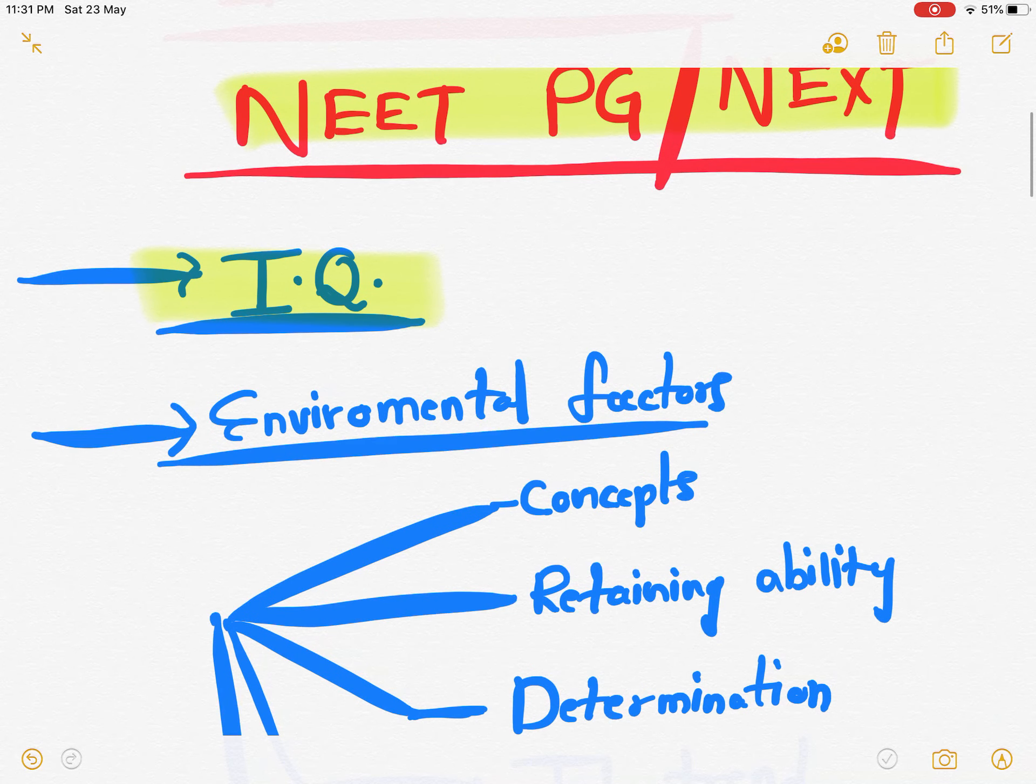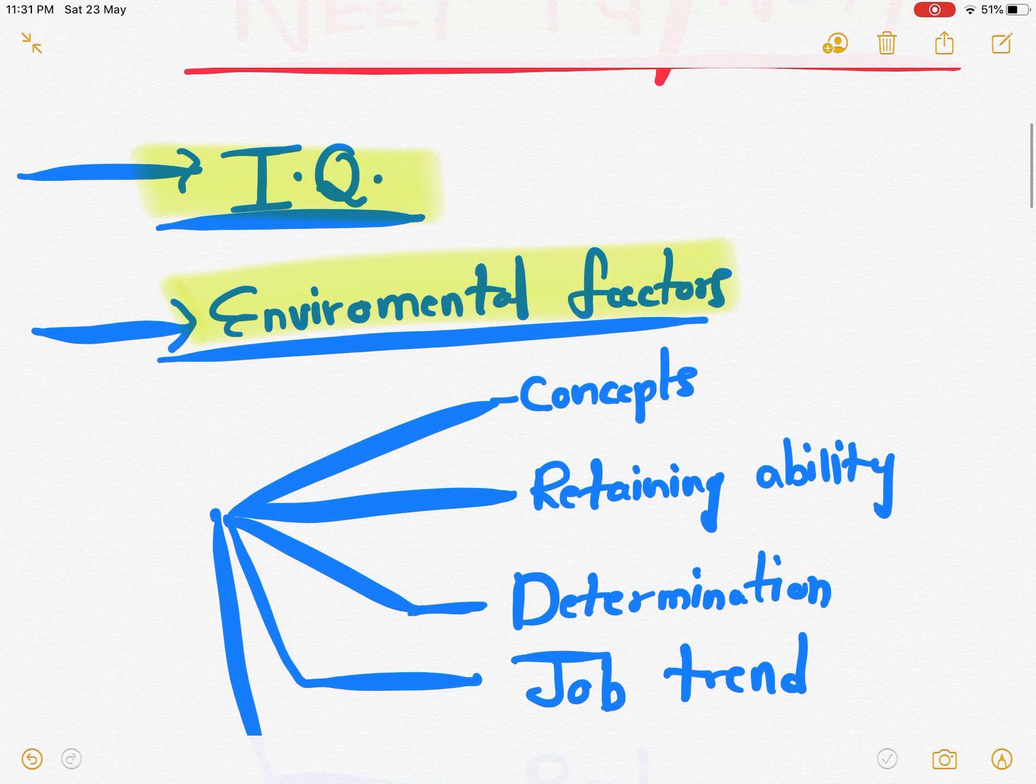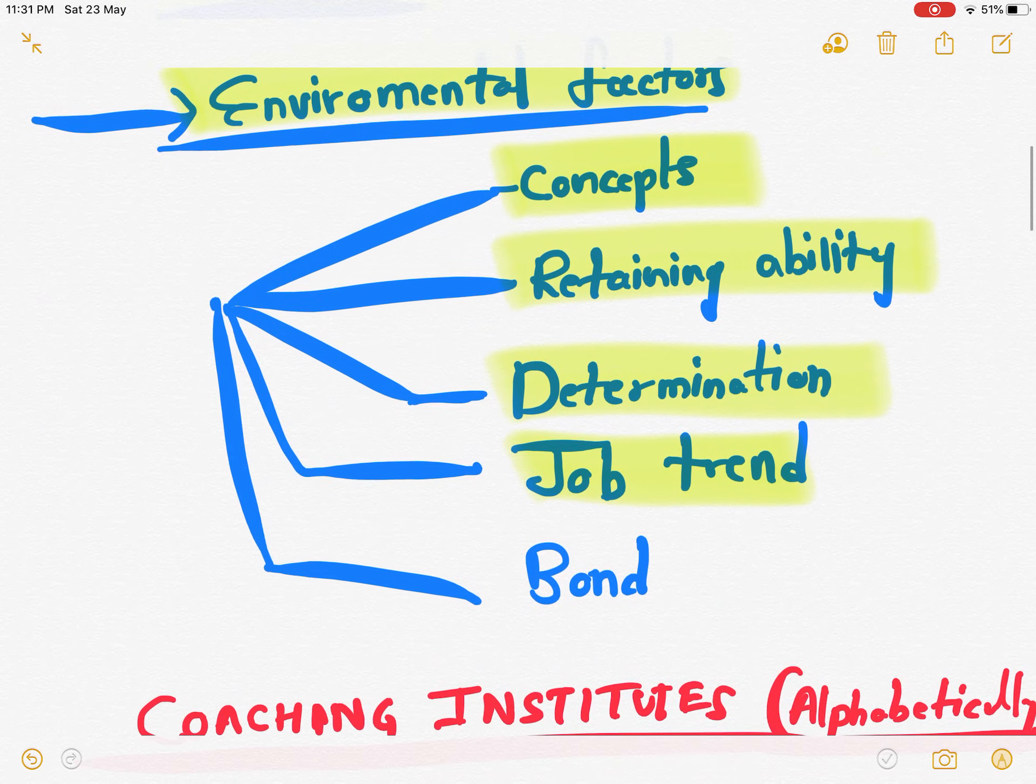Second thing is the environmental factors. I am grossly taking some factors into environmental factors like concepts, retaining ability, determination or trend of job, and lastly the bond.